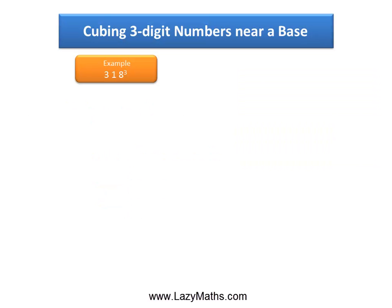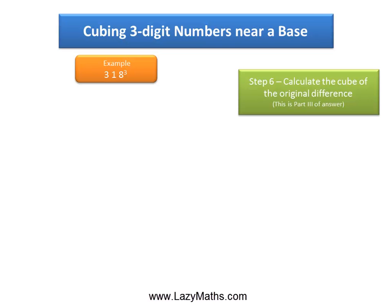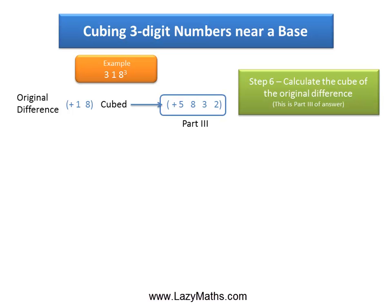Now for the last part, Part 3 of the answer, we simply cube the original difference: 18 times 18 times 18 gives us 5,832. And this becomes Part 3 of the answer.